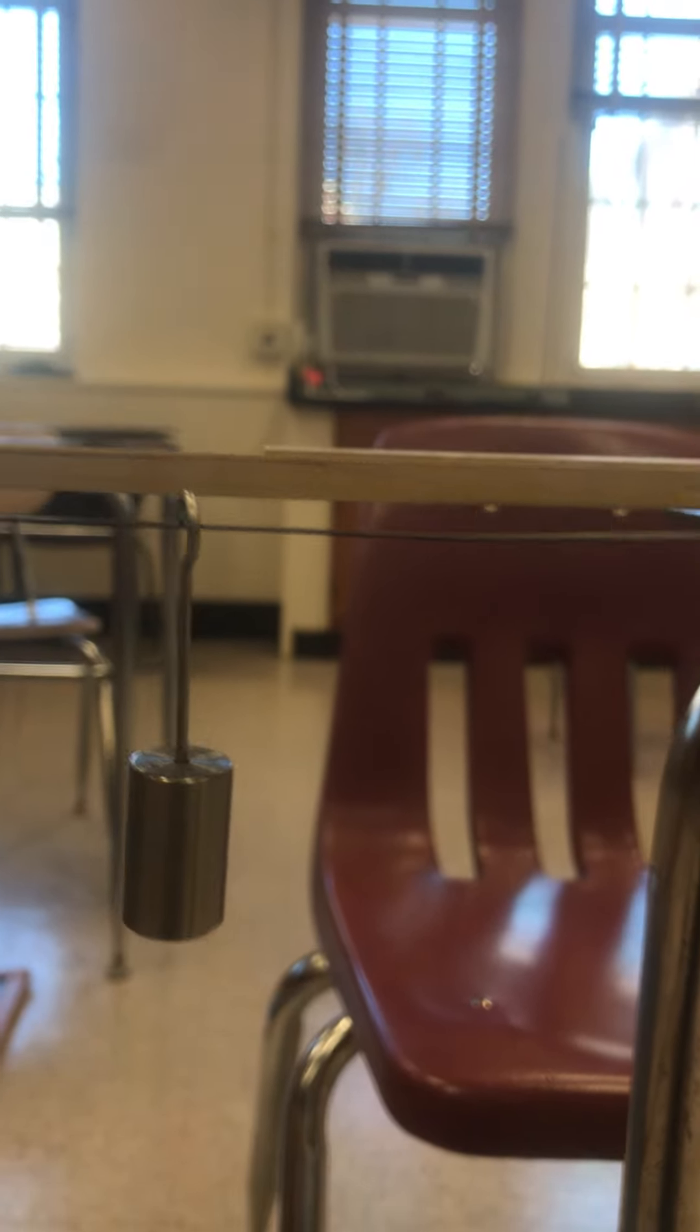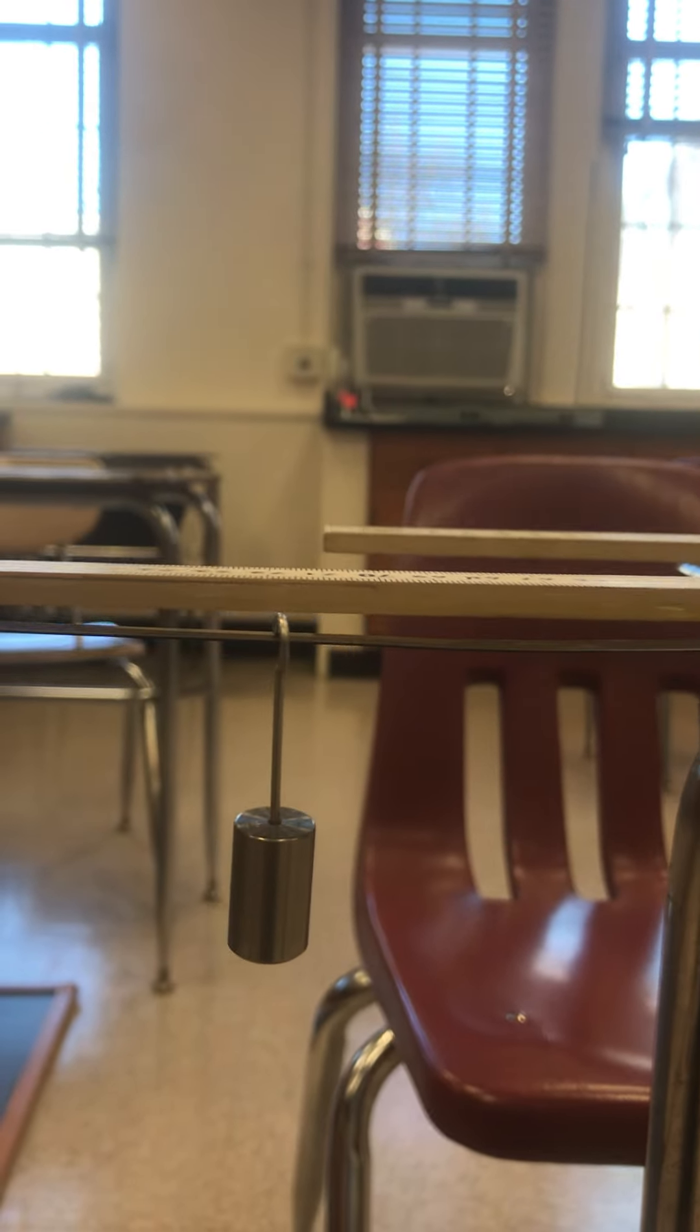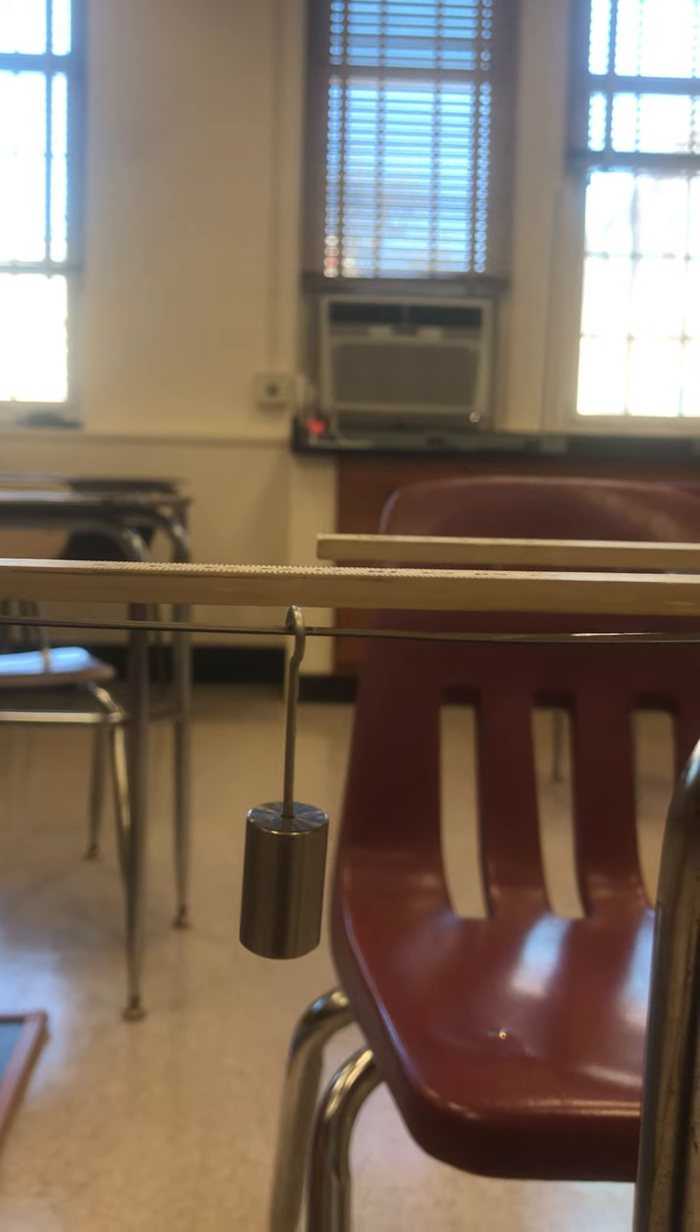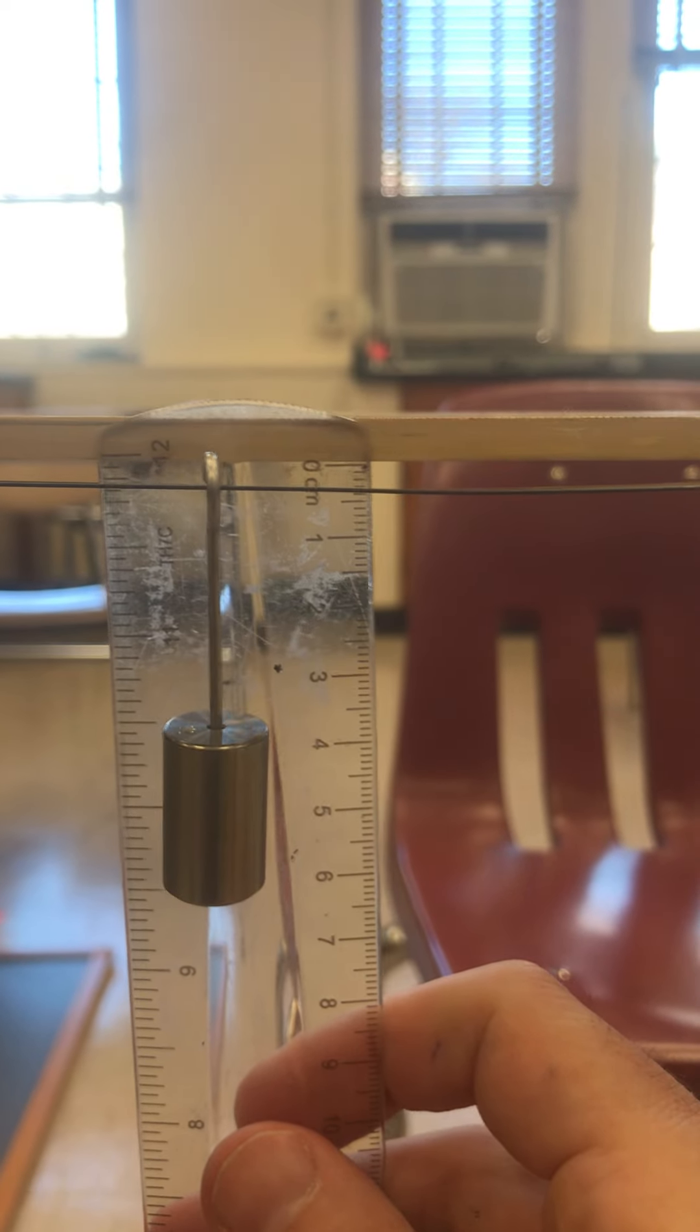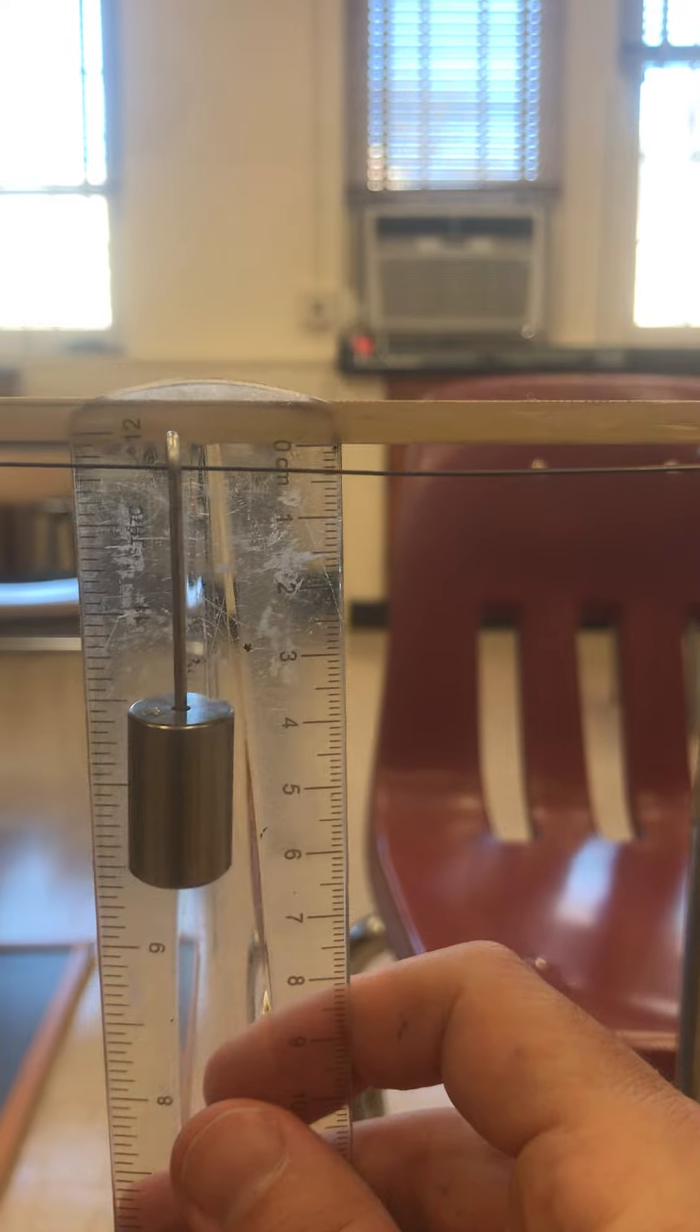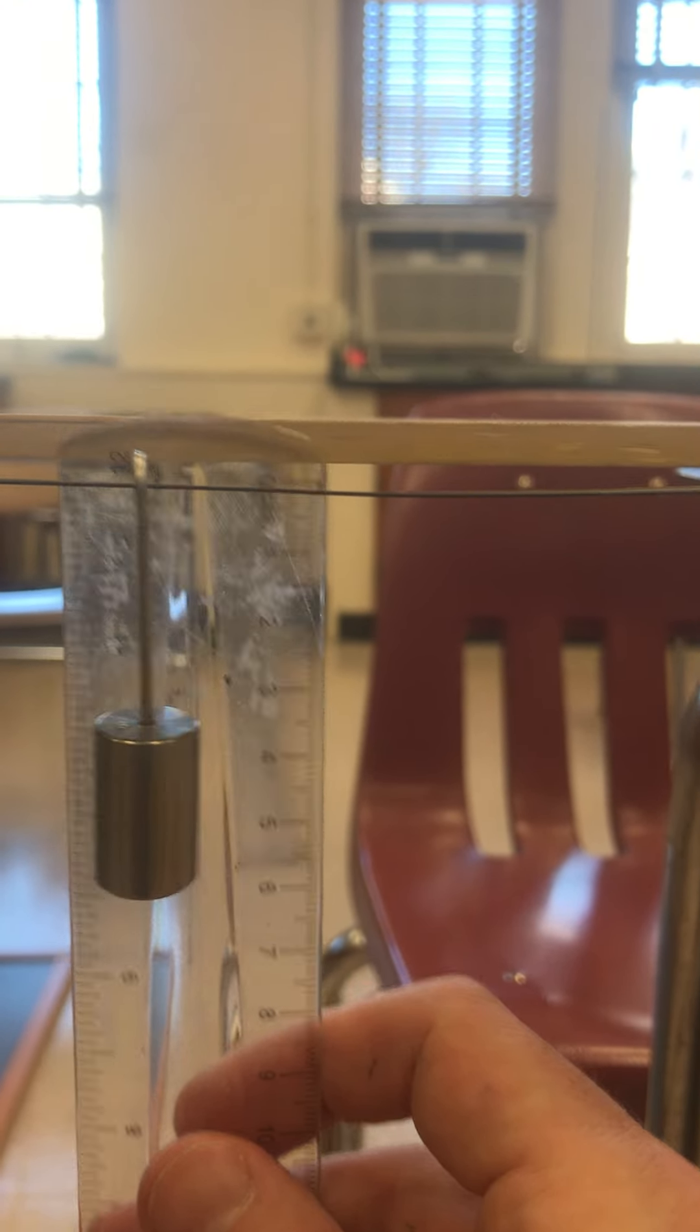If I take my 20 gram mass and hang that there, what we're wanting to do is measure that gap between here and the ruler. We can see about 0.4 centimeters, just so you can see what I'm looking at.